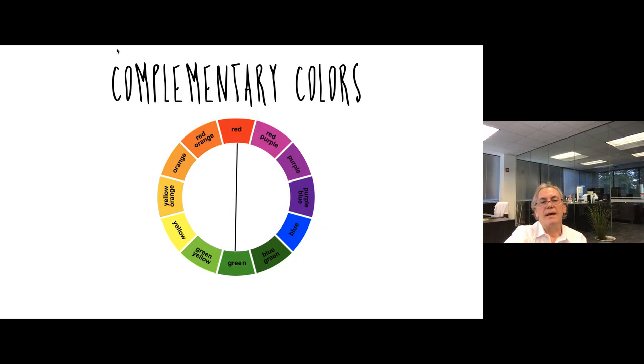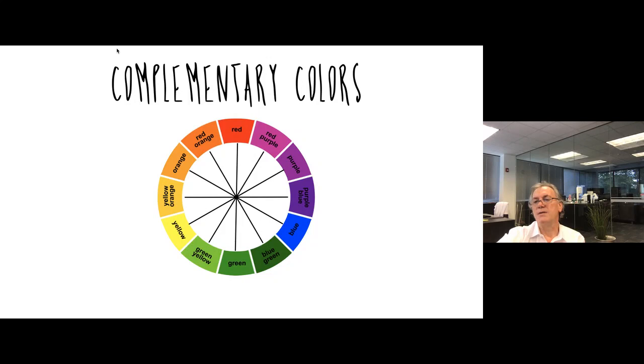So, we have the complementary color scheme where it relates to color opposites. So, the yellow is a complementary of purple. The red-orange is a complementary of the blue-green, and so on and so forth. And usually, the complementaries are used to lower the value.